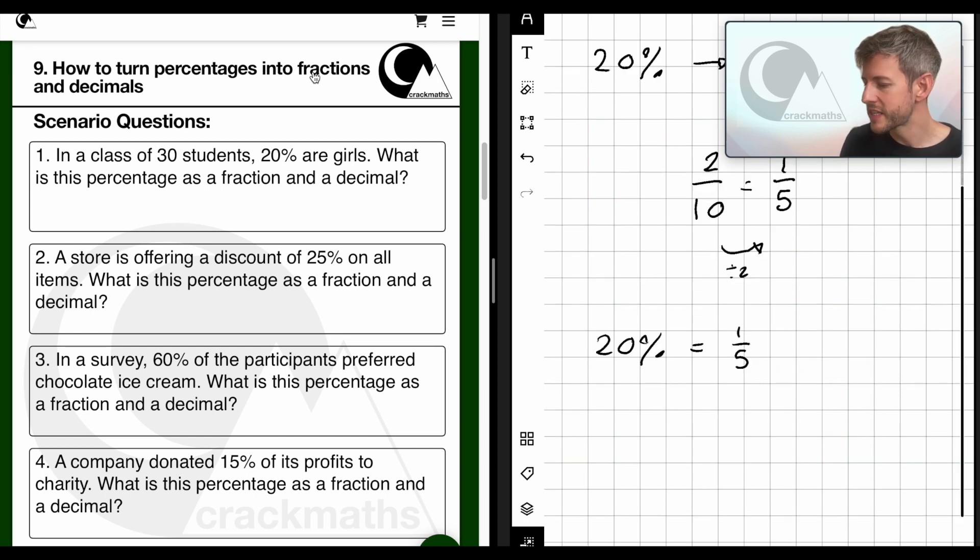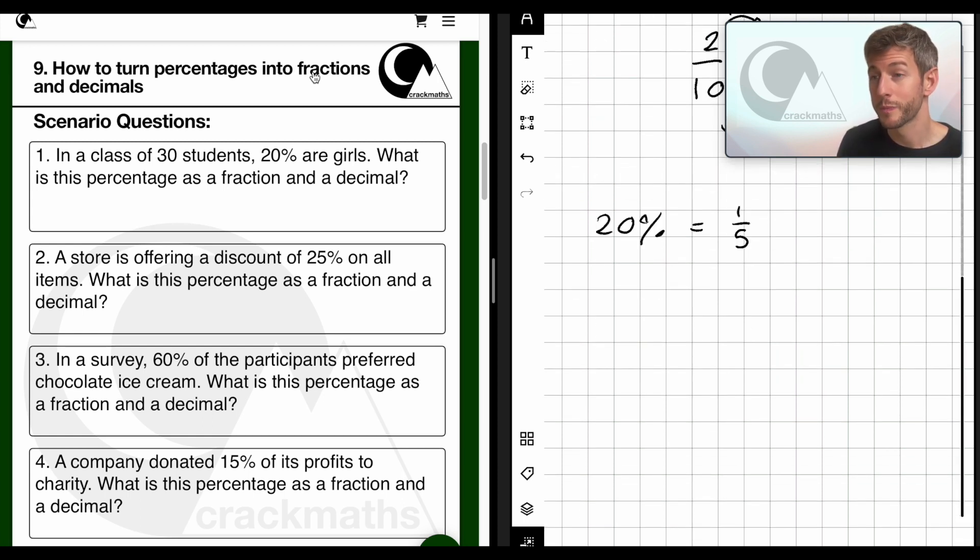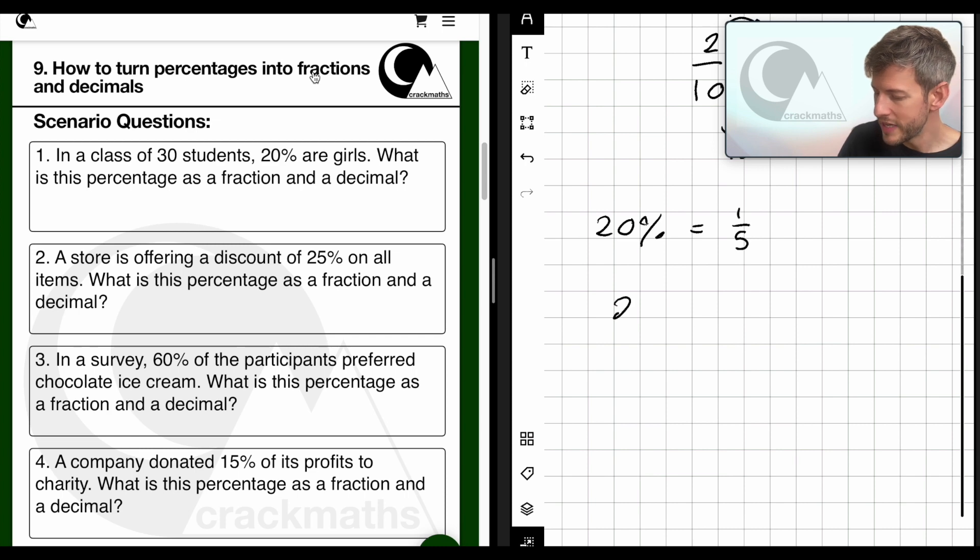Now we need to convert 20% into a decimal. So 20 divided by 100. And this equals 0.2. Okay.